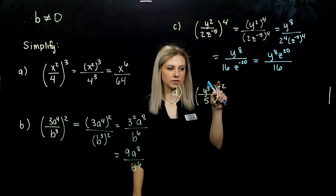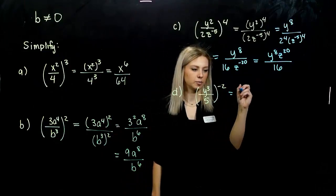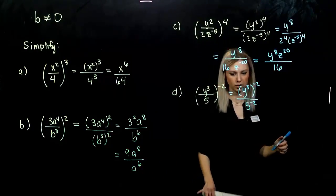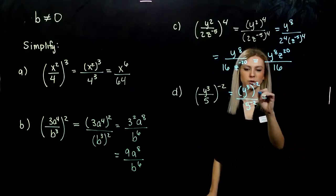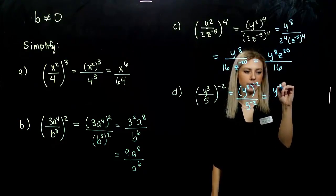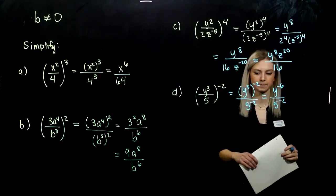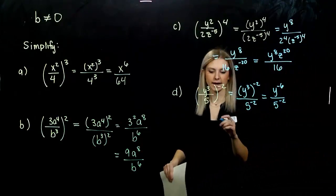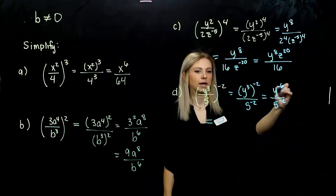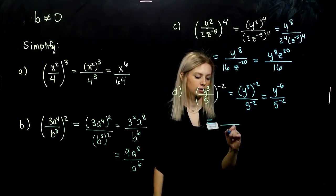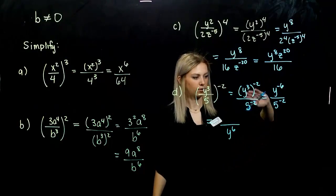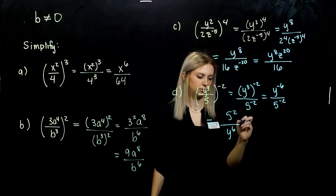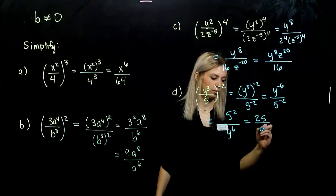For part d, distributing negative 2, the power, to both the top and the bottom. When raising a power to a power, we multiply. Both end up negative, so we need to make those exponents positive. y to the 6th goes down to the denominator, and 5 to the negative 2 flips up, becoming 5 to the positive 2, which is 25. Final answer: 25 over y to the 6th.